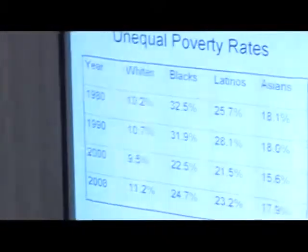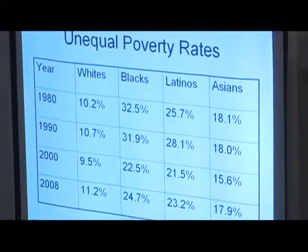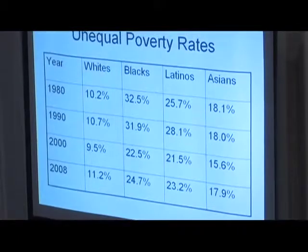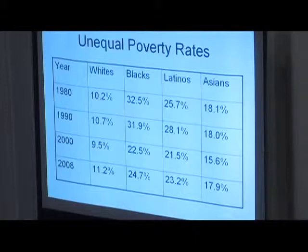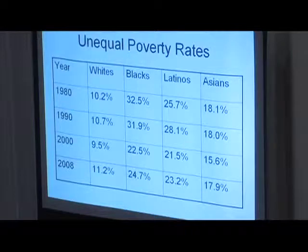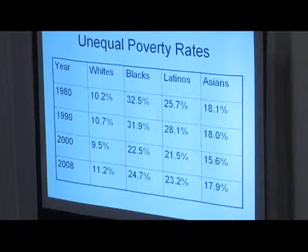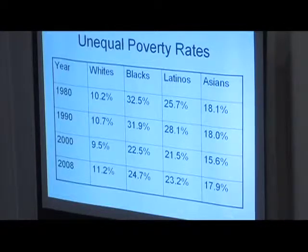Looking at poverty rates first — the most recent statistics from 2008, just before the economic recession: the poverty rate for whites was 11%, which is actually pretty high. But the poverty rate for blacks was 24.7%, twice as high. Latinos were almost as high, and Asians about halfway in between. There are vast differences in poverty rates in our society. This has been true consistently, although the gap between whites and blacks has narrowed somewhat, and blacks and Latinos are now pretty much on the same level.